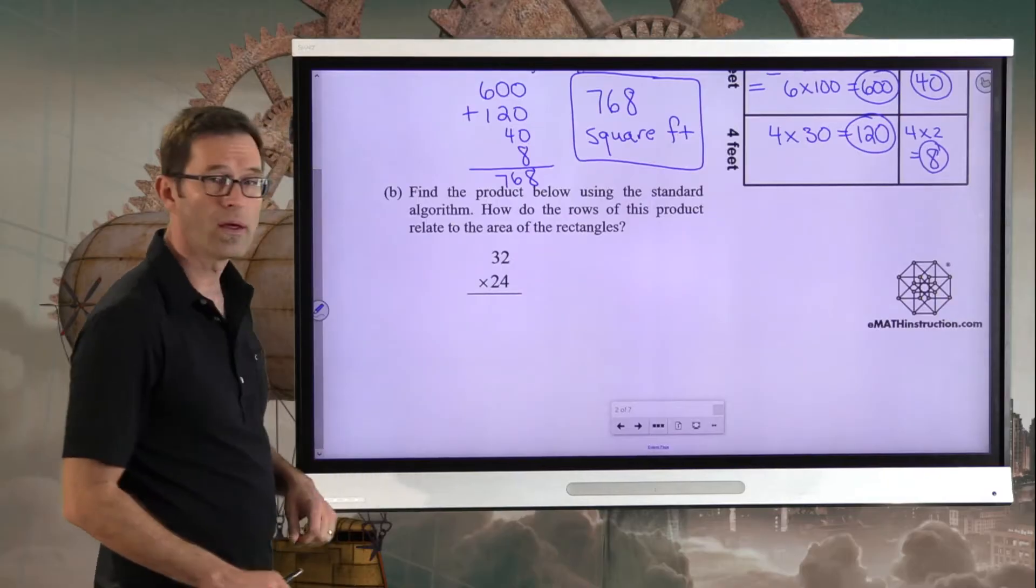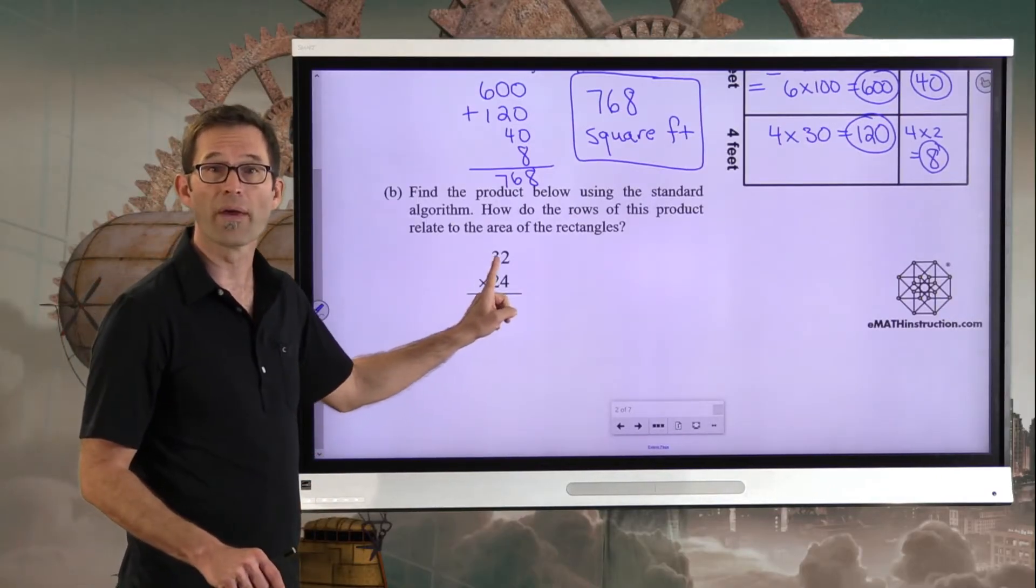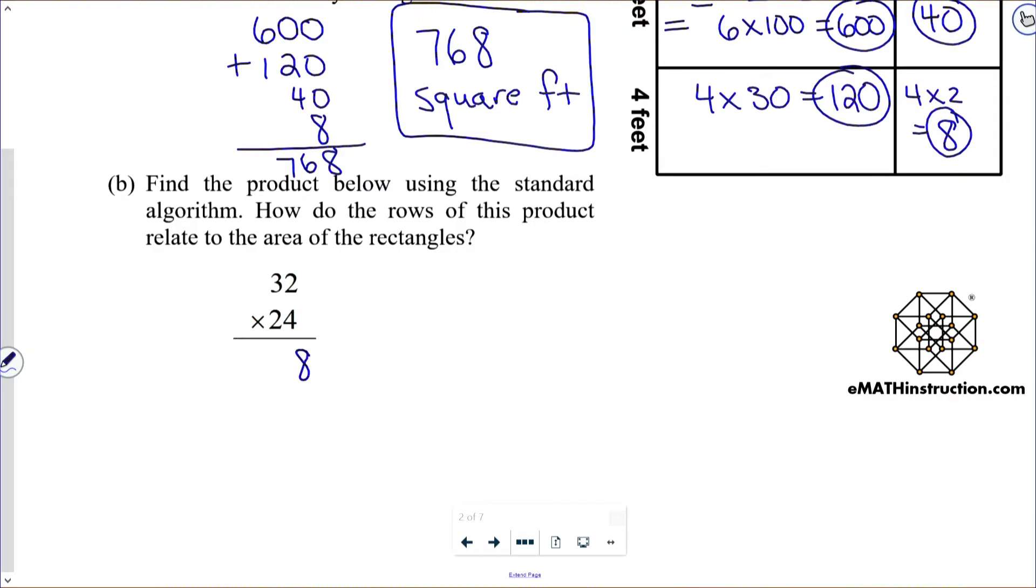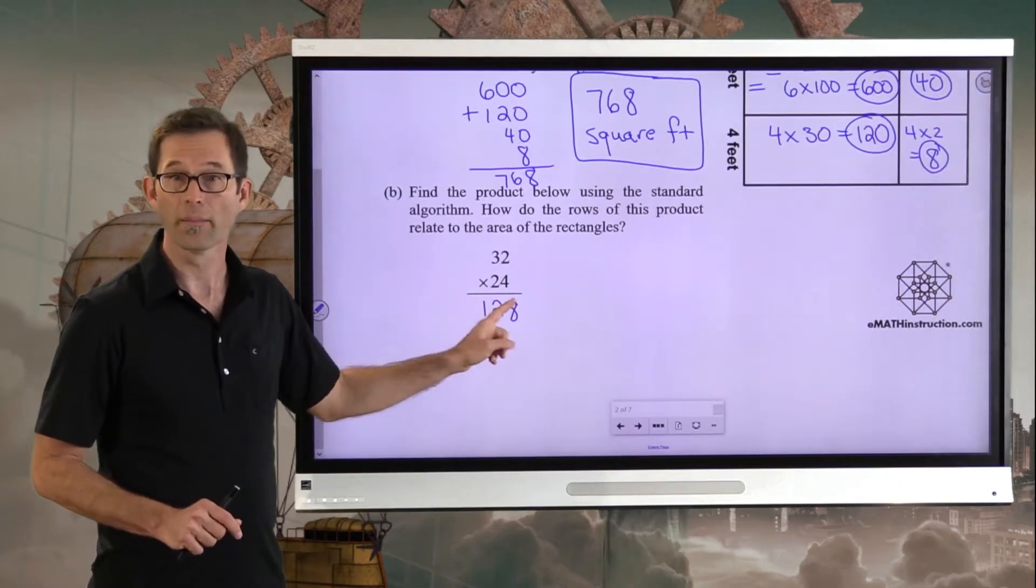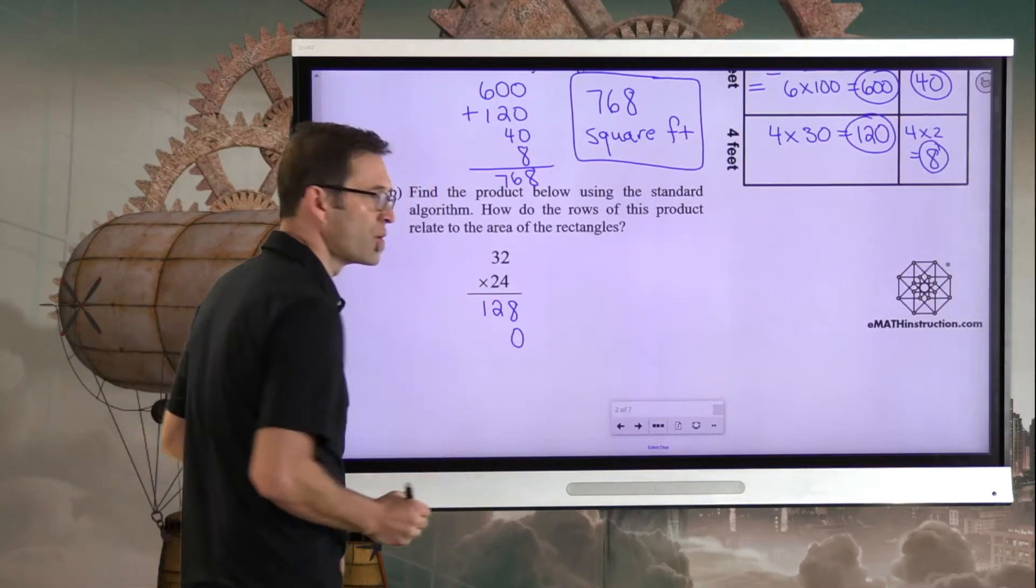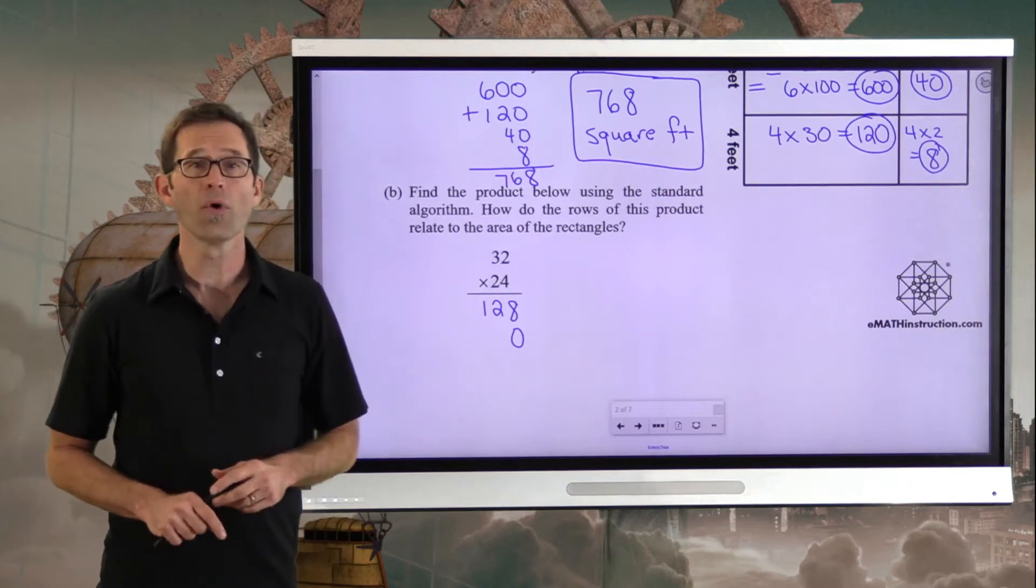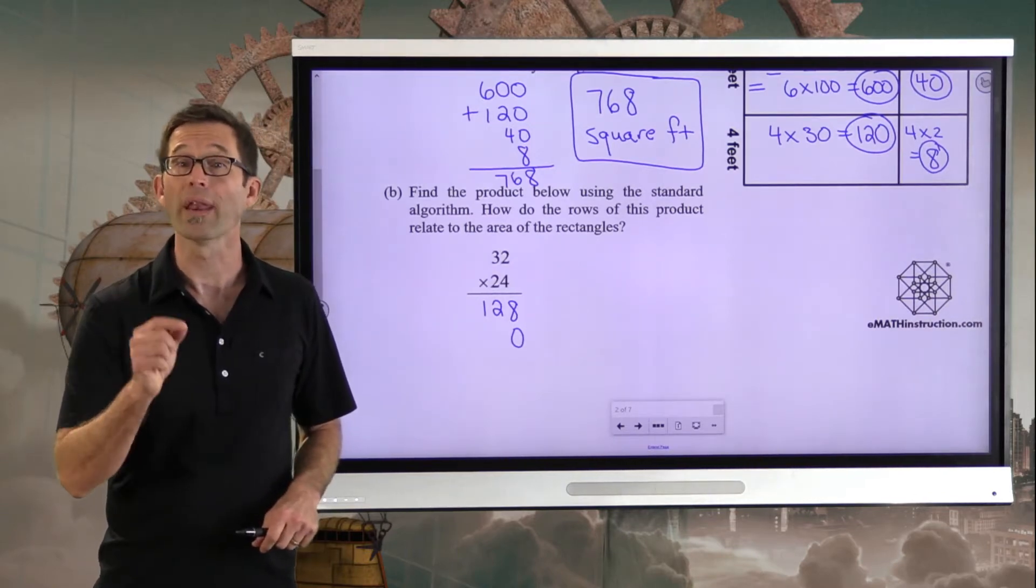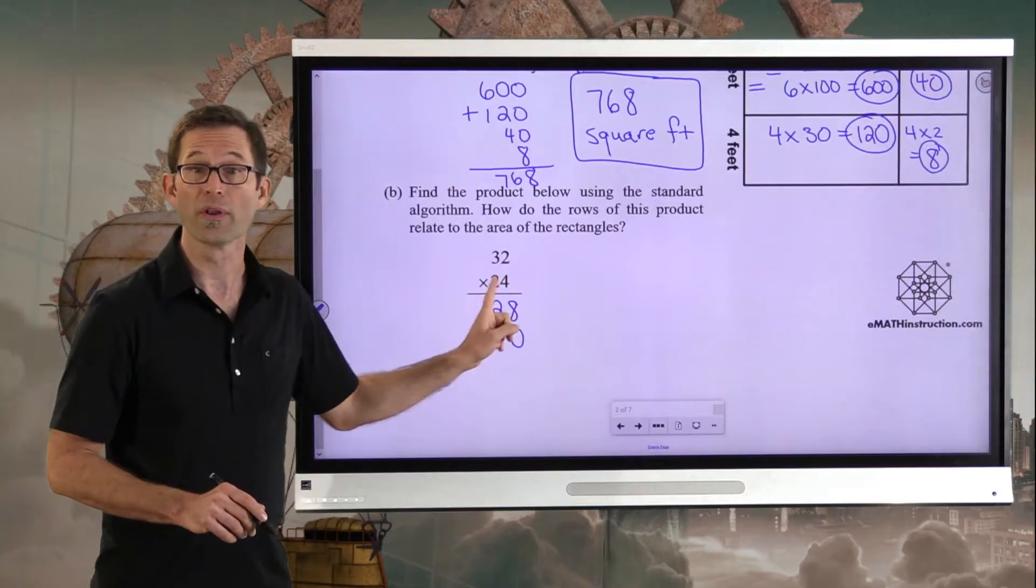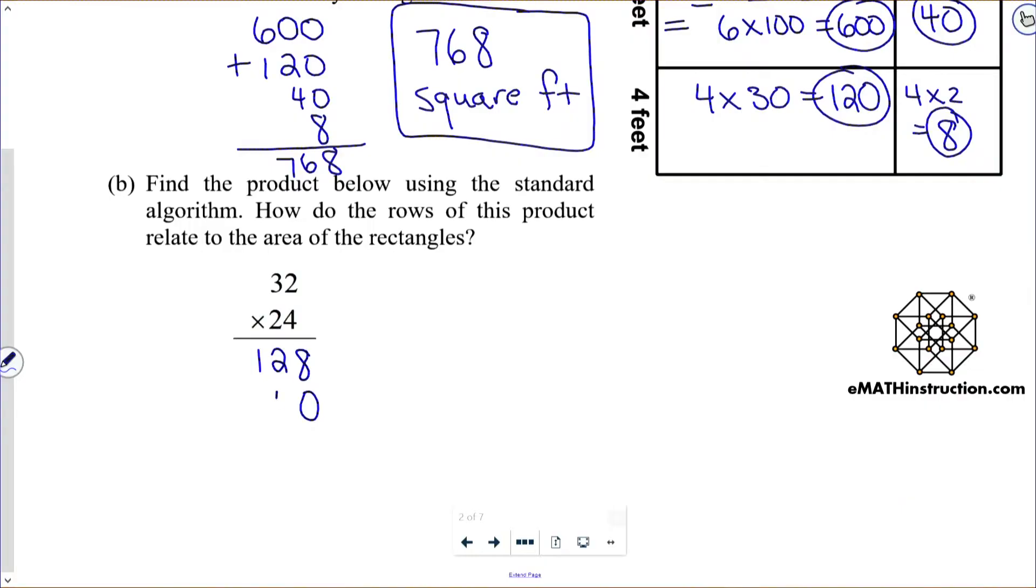If I want to multiply 32 times 24, I'm going to take my 32 and multiply it by 4. So first, 4 times 2 is 8, and then 4 times 3 is 12. That is 32 times 4. But remember, when we then want to go down and multiply by the 2, we're going to first add a zero on. Why? Because we're not really multiplying by 2, we're multiplying by 20. So now we're just going to do 32 times 2, and that's 2 times 2, which is 4, 2 times 3, which is 6, and add them, and we get our 768.